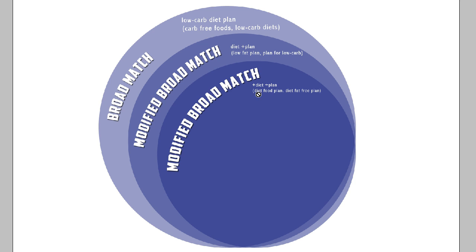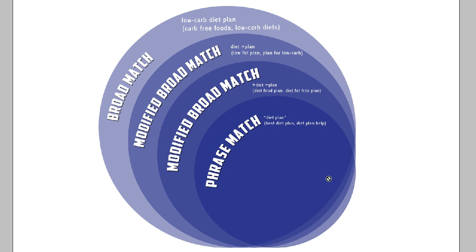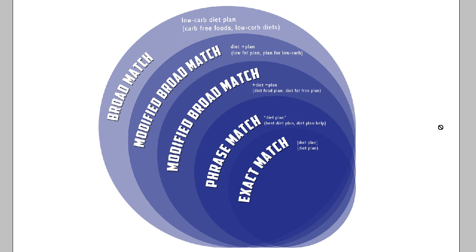Then we have phrase match, where we put our keyword in quotes — so 'diet plan' in quotes would trigger my ad for searches like 'best diet plan' or 'diet plan help.' And of course there's exact match, where you put the keyword in brackets — so 'diet plan' in brackets would only trigger the ad if the exact keyword 'diet plan' was typed in.